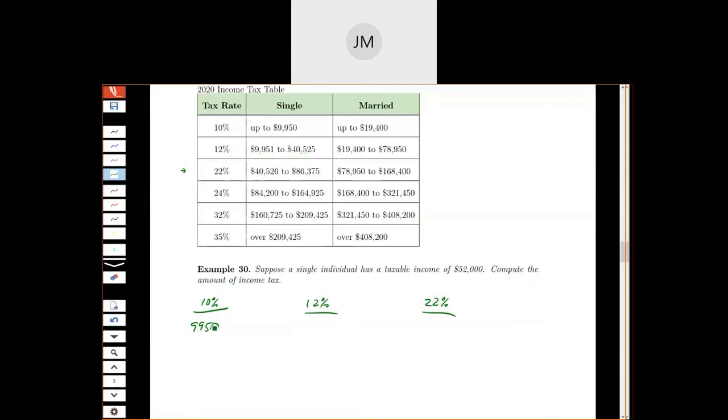This goes up to $40,525, but it doesn't start at zero, so I can't dump $40,000 into it. I'm dumping the money starting with $9,951.